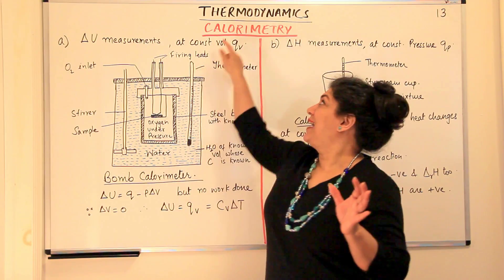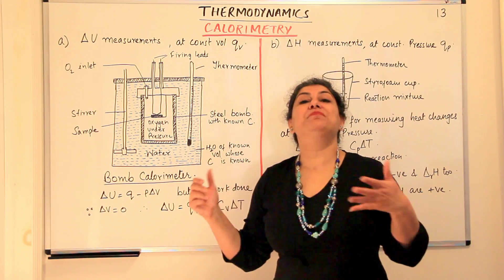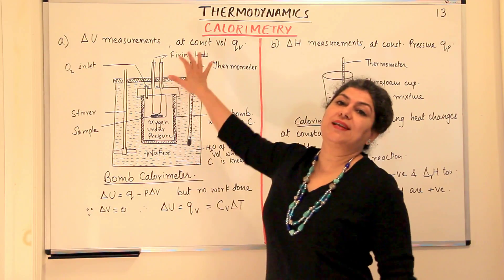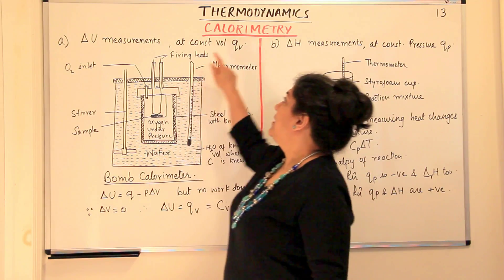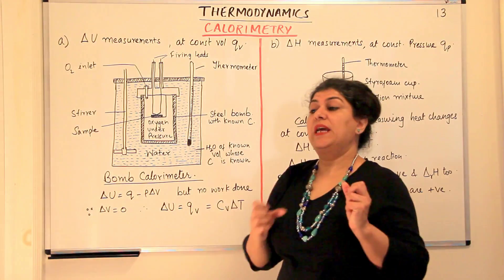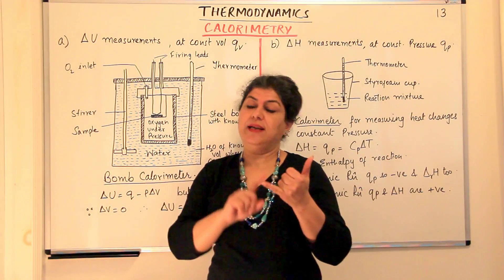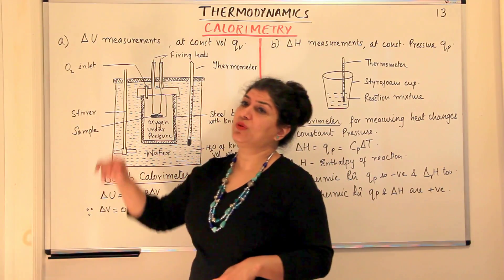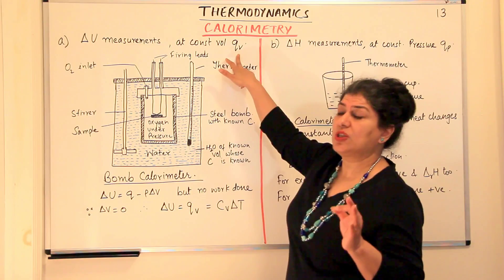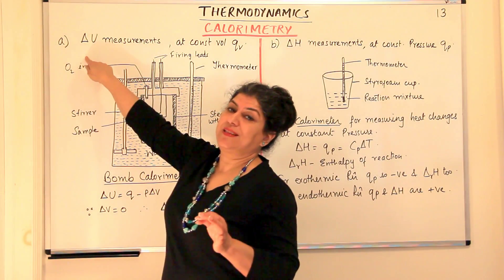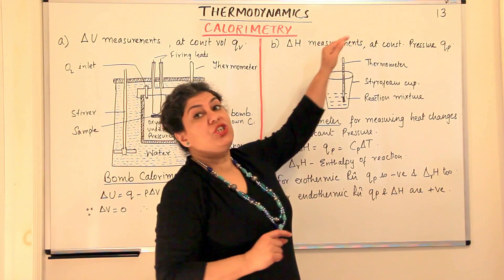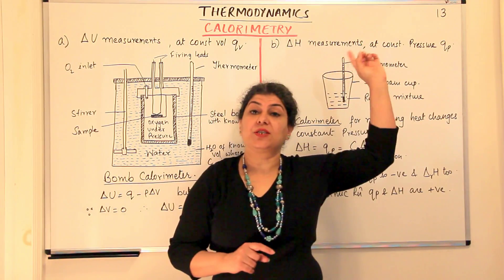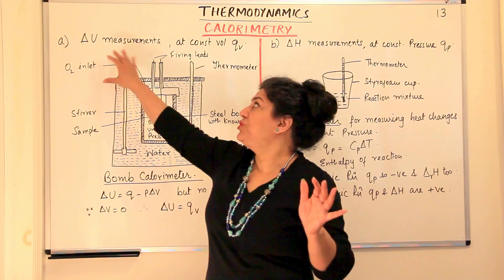If you divide the word calorimetry into two parts: calorie is the unit for energy or heat, and metry means measuring it. So the measurement of heat which is given out or absorbed in thermodynamic systems or processes is known as calorimetry. Heat exchange may be done under two conditions — either at constant volume, or at constant pressure. Heat exchange at constant volume equals the internal energy change, and at constant pressure it equals the enthalpy change, the derivation of which was taught in part 10.